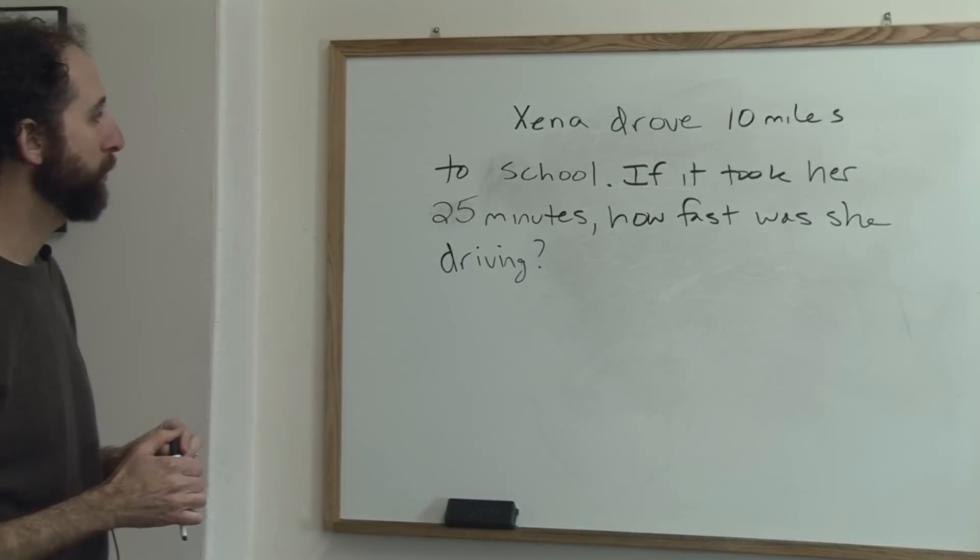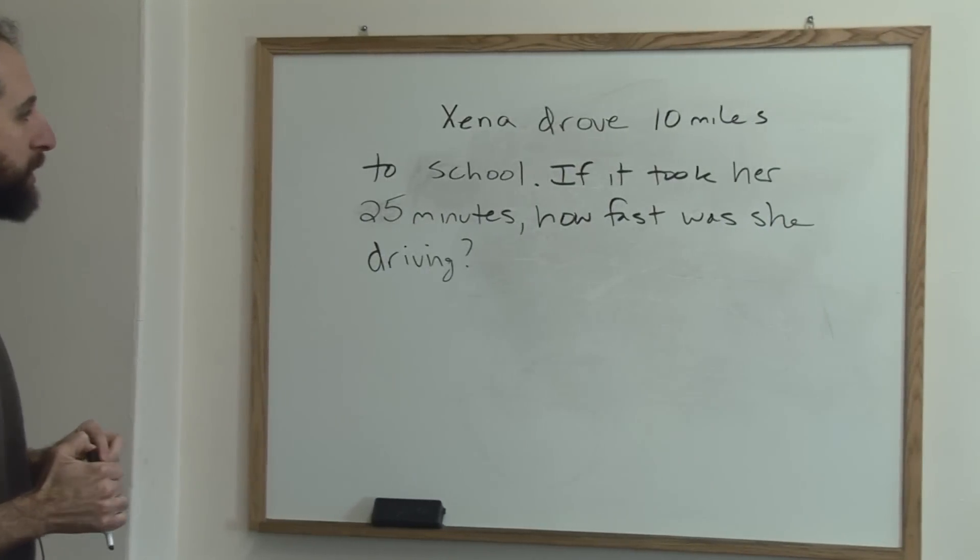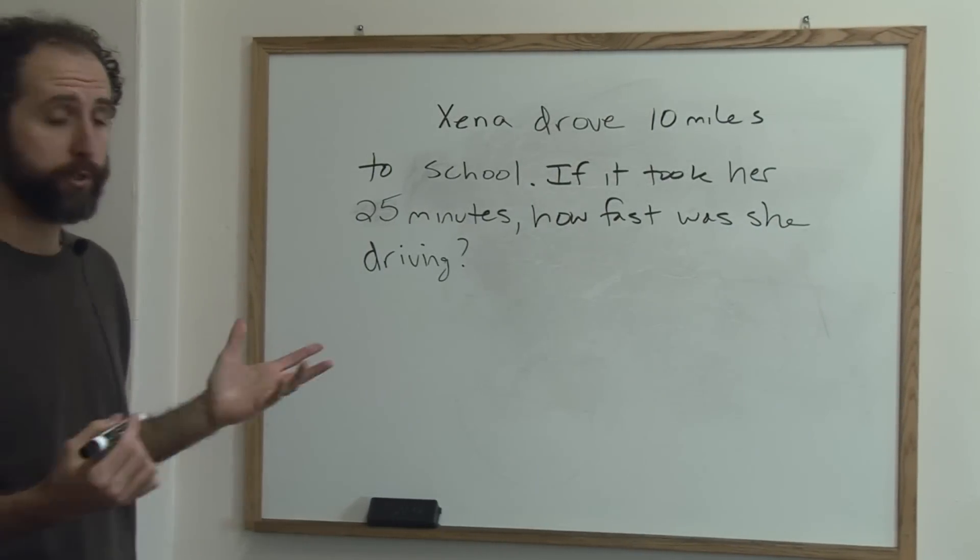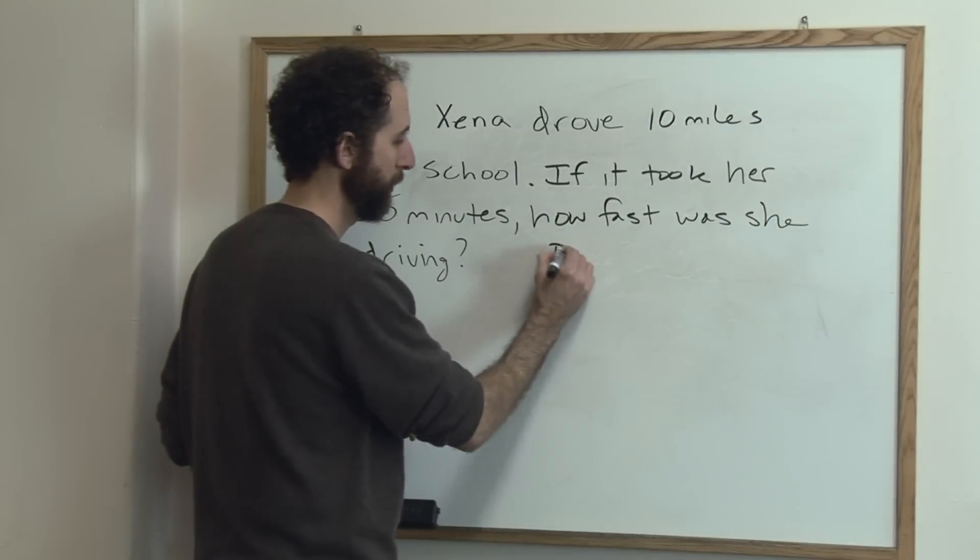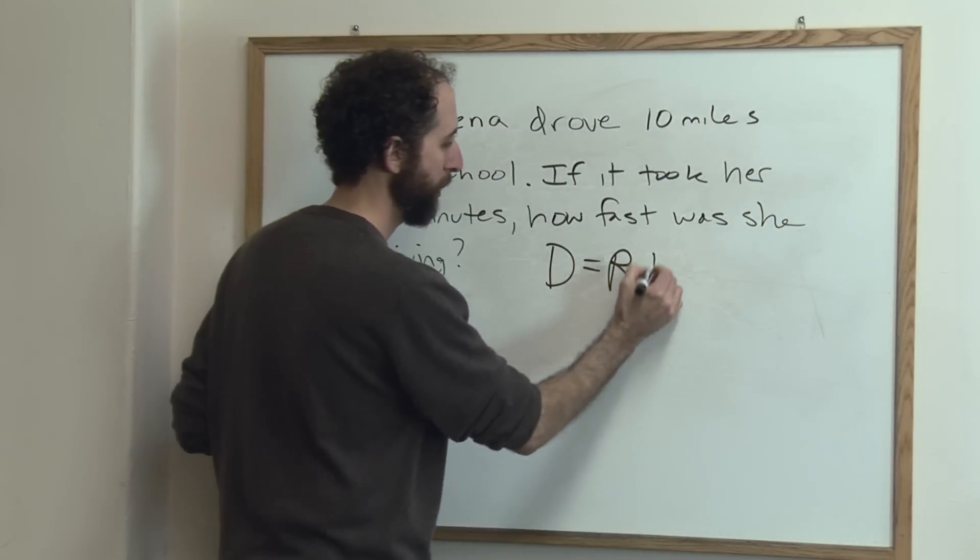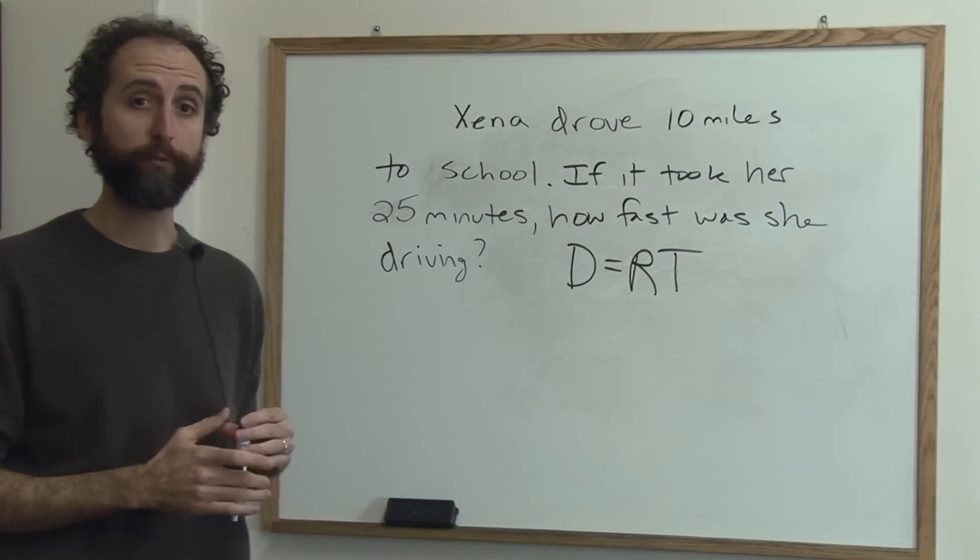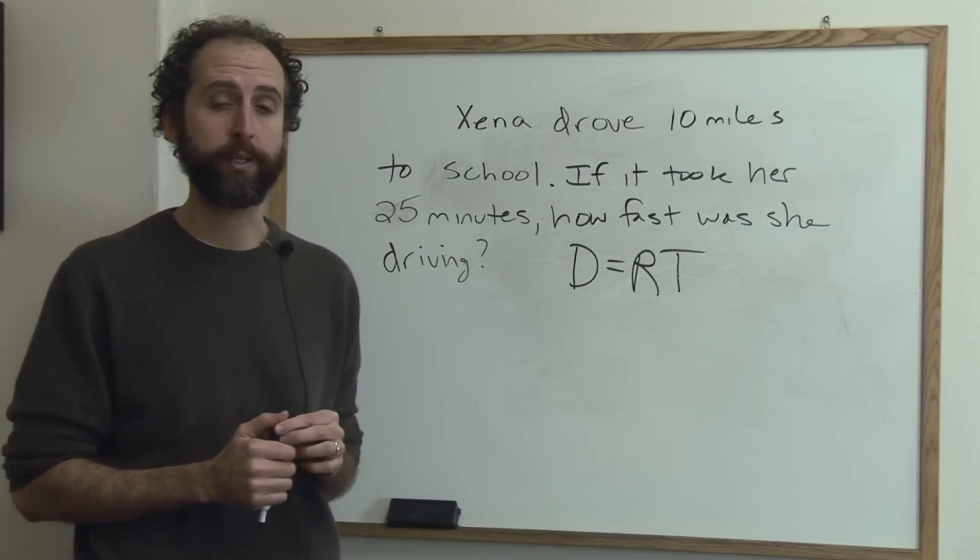Zena drove 10 miles to school. If it took her 25 minutes, how fast was she driving? So this is a distance equals rate times time. D equals RT, probably the single favorite formula of math textbooks.